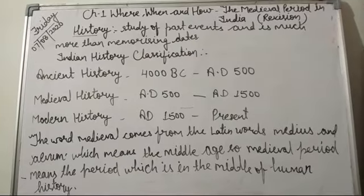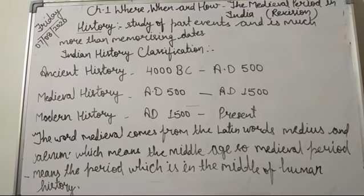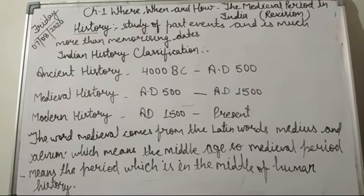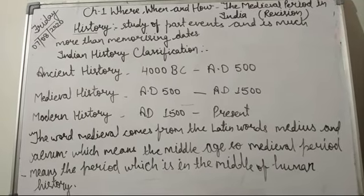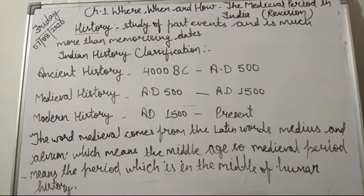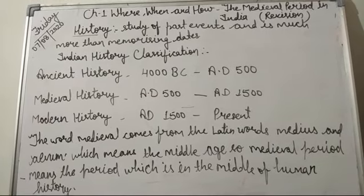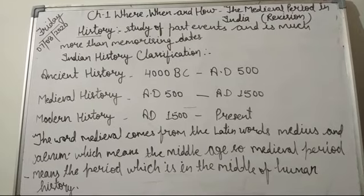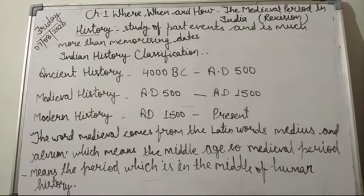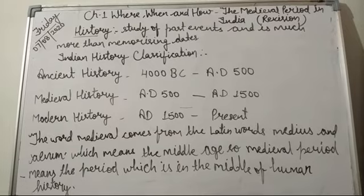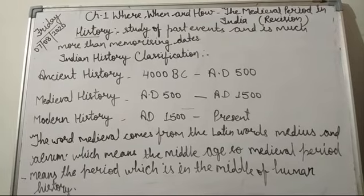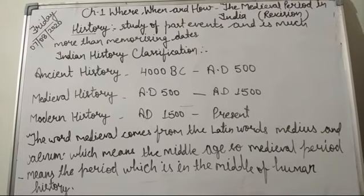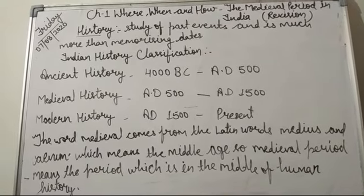There are different terms used to describe the subcontinent. During the Vedic age, India was known as 'Sapta Sindhu' or the land of seven rivers. These rivers were the Indus, Jhelum, Chenab, Ravi, Beas, Sutlej and the mythical Saraswati. 'Sindhu' was the Sanskrit term used for the river Indus, and this reference was found in the holy book of ancient Persia, the Zend-Avesta.